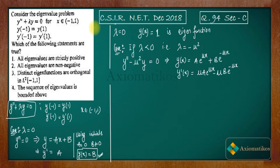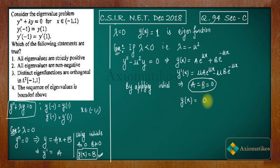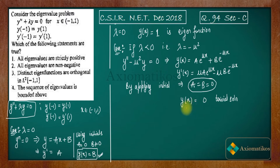By applying the boundary conditions, we get a = b = 0. If a = b = 0, then y(x) = 0, which is a trivial solution. This means that corresponding to a negative eigenvalue, we get a zero eigenfunction, which is not possible. Therefore, λ < 0 cannot be an eigenvalue.